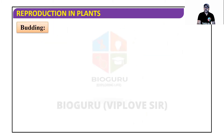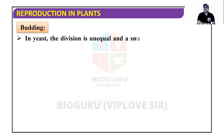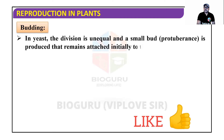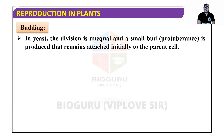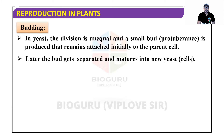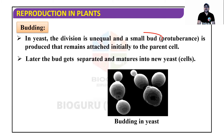Next is budding, which is an example of unequal division. In budding, division is unequal and a small bud is produced that remains attached initially to the parent organism. Later the bud gets separated and matures into a new individual. You can see the small buds in yeast cells.